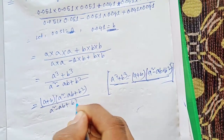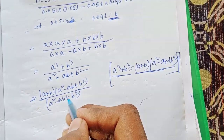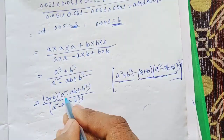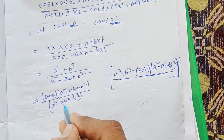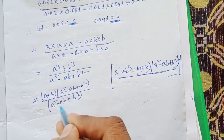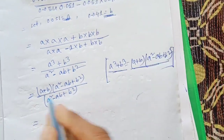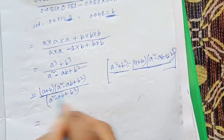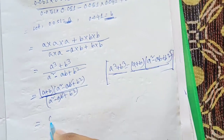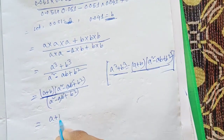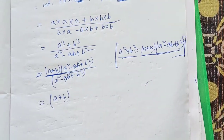In the numerator and denominator we have the same value: a² − ab + b². So this common factor gets cancelled.